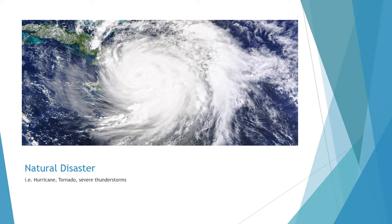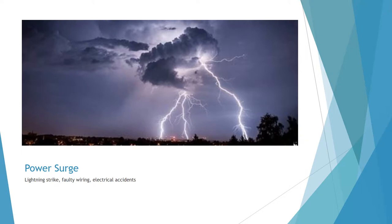A close relative of lightning strikes is the power surge effect — other sources could be faulty wiring or electrical accidents. It happens all the time. Power surges are a real issue that can definitely cause downtime. Something hits your building and you lose power — not only does your desktop not work, you can't access your printer, your internet's down. Everything's down.